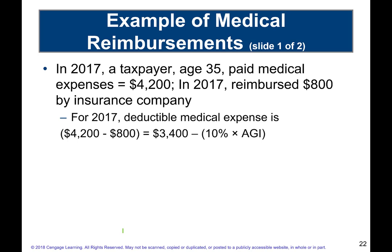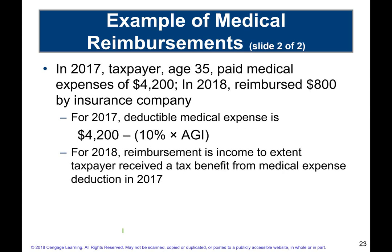Example: In 2017, a taxpayer age 35 paid medical expenses of $4,200 and received $800 reimbursement from insurance. The net deductible amount is $3,400, subject to the 10% AGI limitation. In a second example, if the $800 reimbursement isn't received until 2018, the full excess is deductible in 2017, and the $800 must be included as income in 2018 under the tax benefit rule.